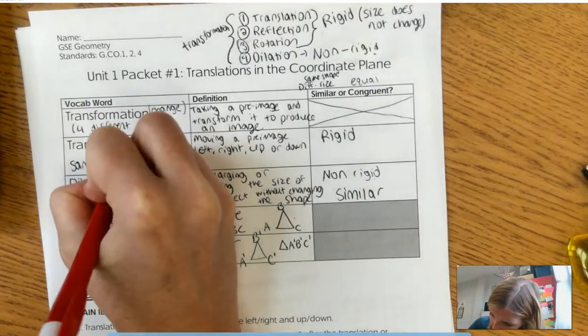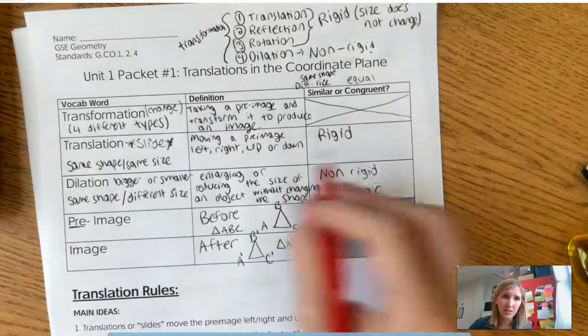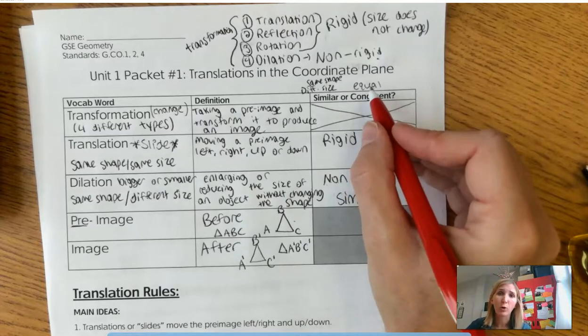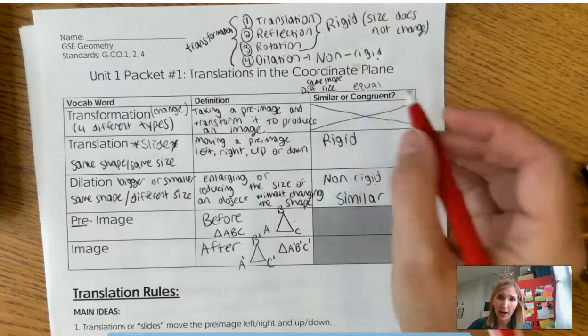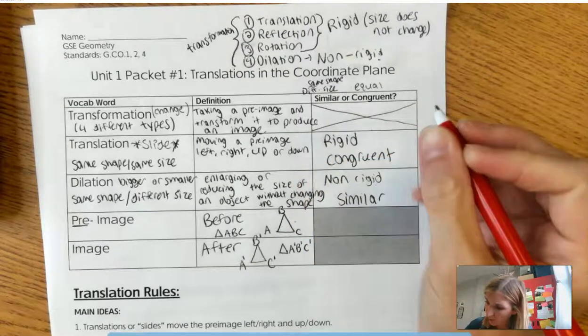Now with translation, it's the same shape and the same size, right? I'll go ahead and write that right here. Same shape, same size. All we did was shift it, right? So that means the pre-image and the image are exactly equal in shape and size. So the pre-image and the image are congruent.